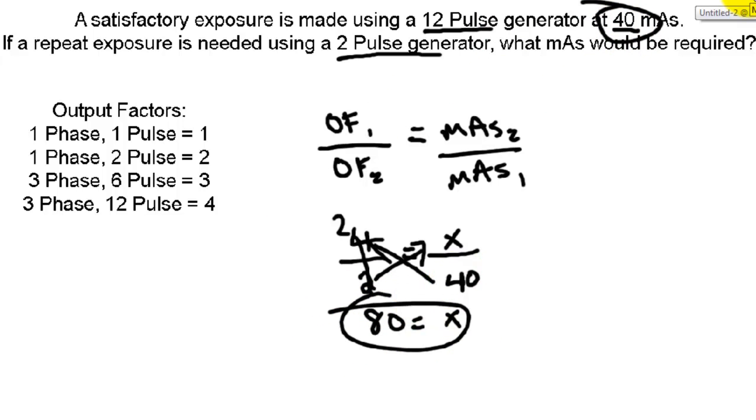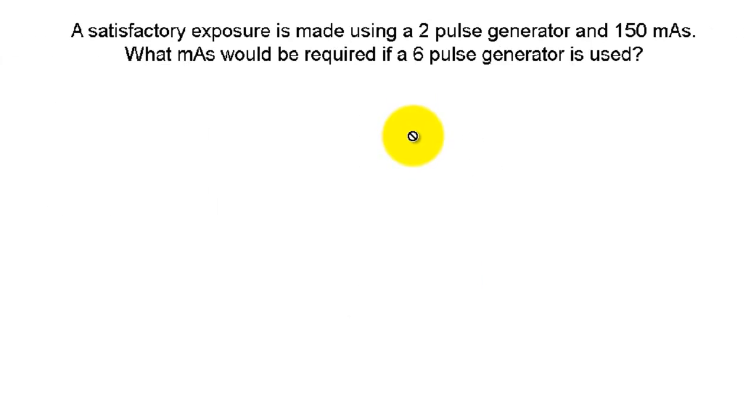Alright, let's look at another problem. A satisfactory exposure is made using 2 pulse generator at 150 mAs. What mAs would be required if a 6 pulse generator is used?